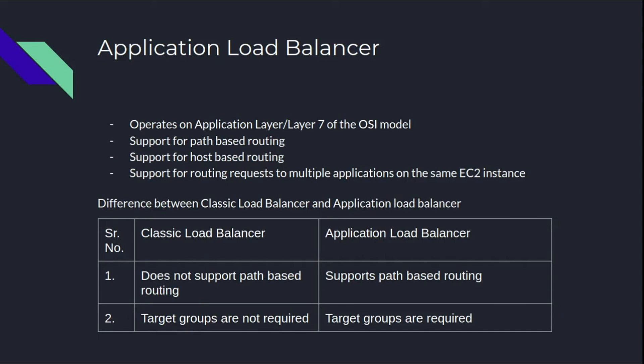I have listed the key differences between classic load balancer and application load balancer. Classic load balancer does not support path-based routing, so if you need path-based routing you must use application load balancer. Additionally, with a classic load balancer you do not create target groups, whereas with application load balancer you must create target groups and register EC2 instances with them.